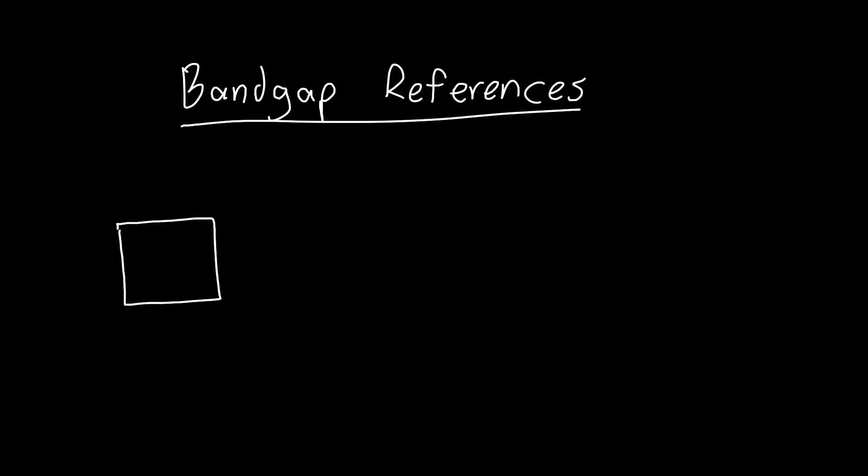Well for a lot of circuit applications we want some circuit, some black box that at its output produces a voltage that's constant, say one volt. And we need this for a lot of different things. We need it for biasing op amps, we need it for biasing current sources, we need it for doing things like making reliable ADCs or DACs.